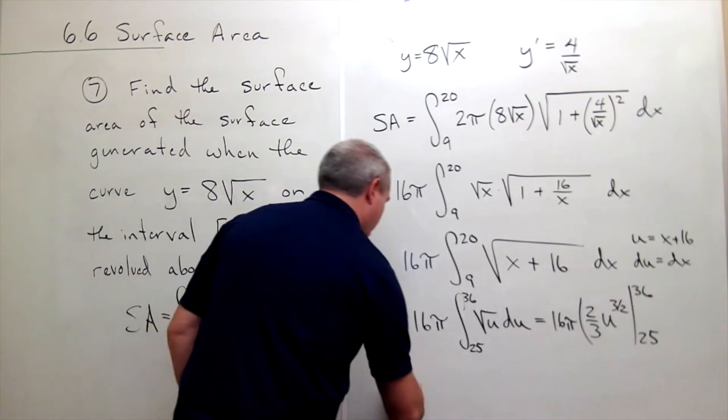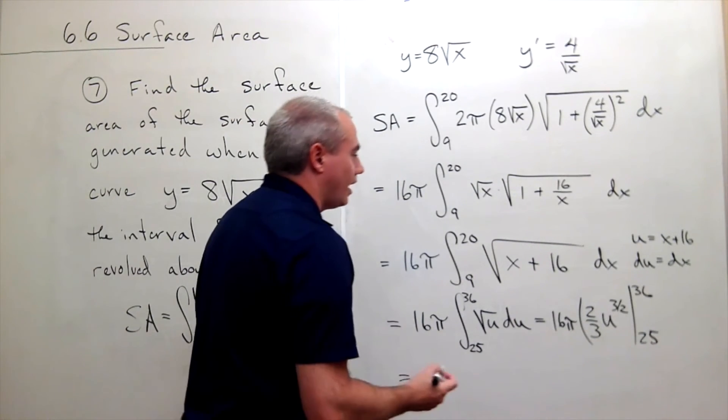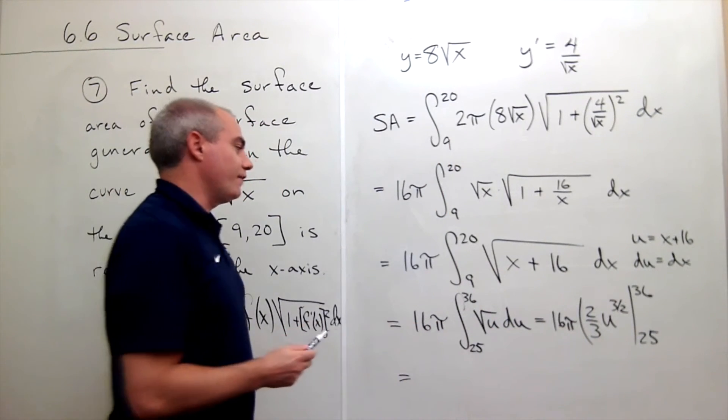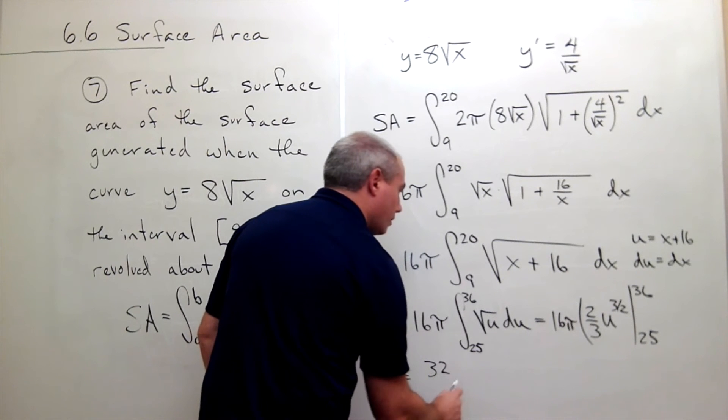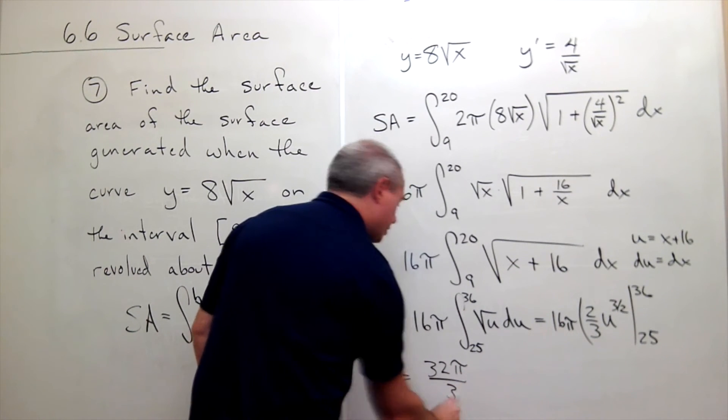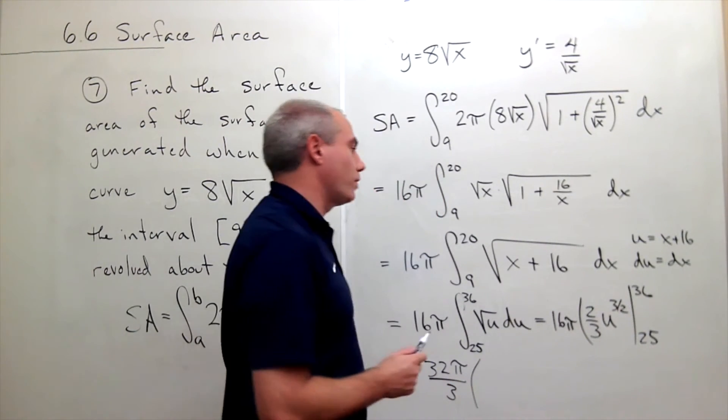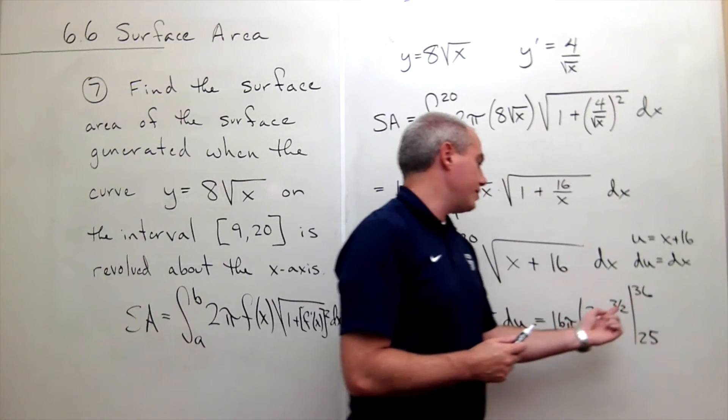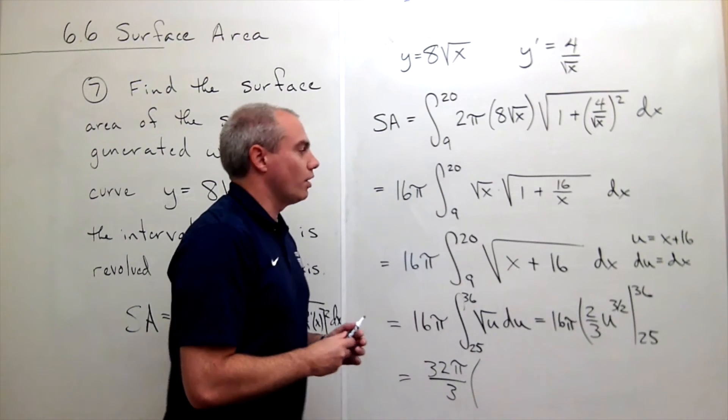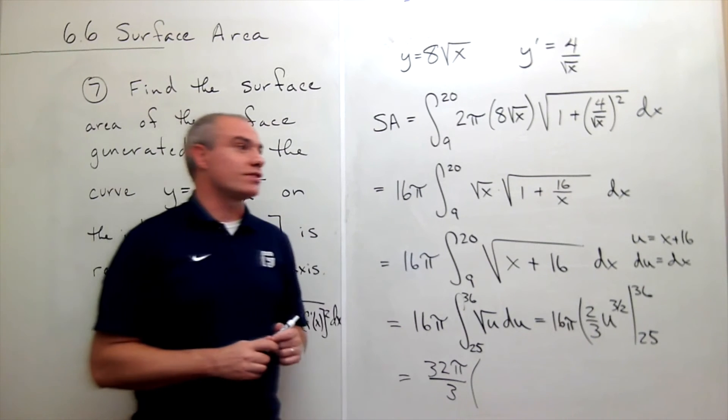Let's plug things in. The 2 thirds could come out here with the 16. If it did I'd get 32π over 3 times, plugging in the 36, what do we get here? I get 36 square rooted then cubed. So the square root of 36 is 6, 6 cubed is 216.